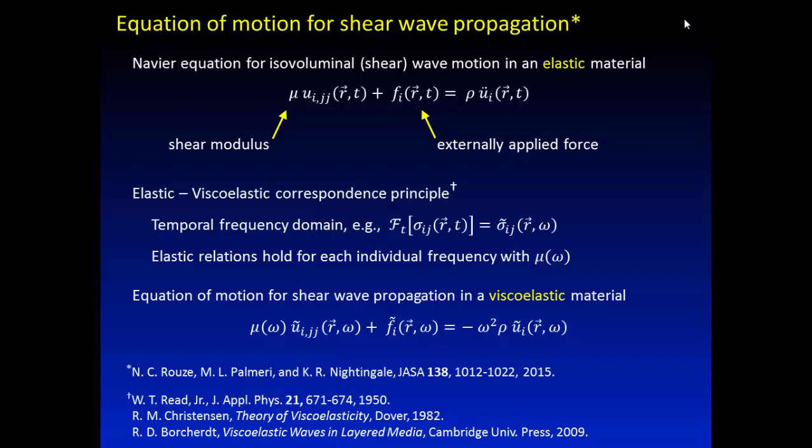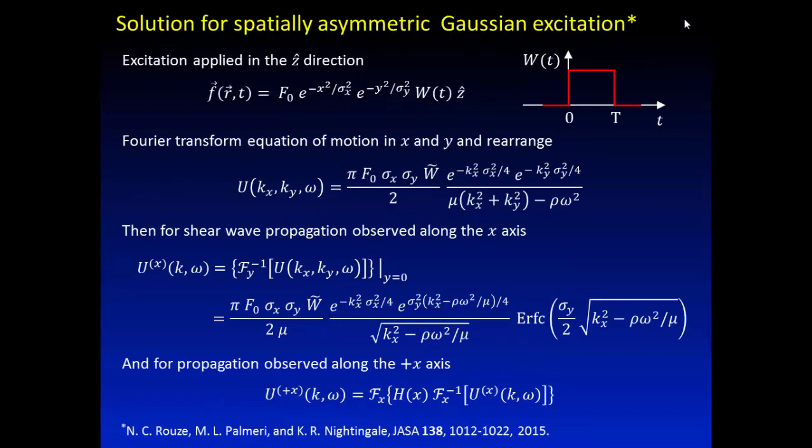We start with our basic wave equation. We have in here some sort of externally applied force, which is where we're going to substitute in our Gaussian formulation here. We're going to apply then an elastic viscoelastic correspondence principle, which effectively just says that we can treat our viscoelastic material as an elastic material with certain parameters at every single discrete frequency in the formulation. So we're able to then build up here this wave equation, move it over into the frequency space, and now we have a formulation of the wave equation as a function of frequency for viscoelastic material.